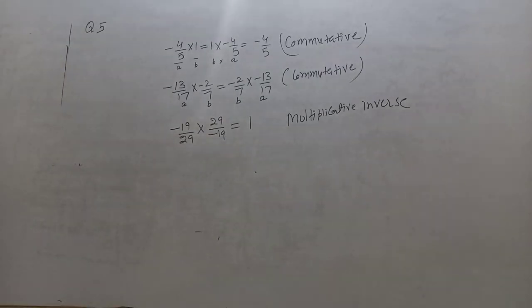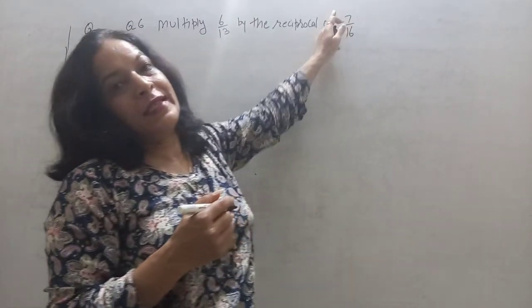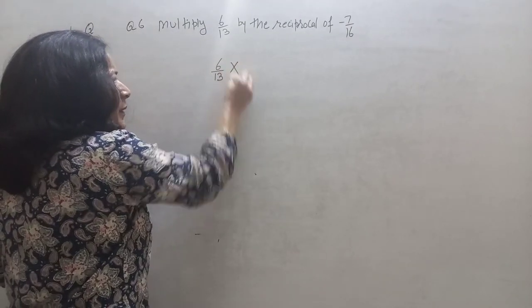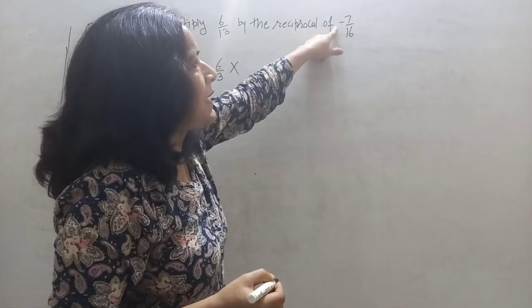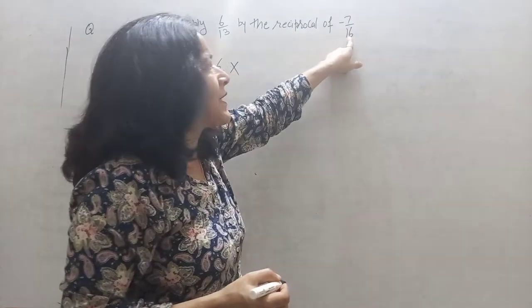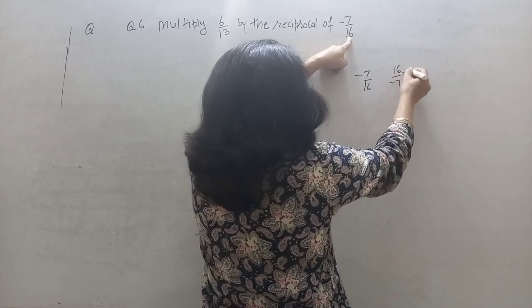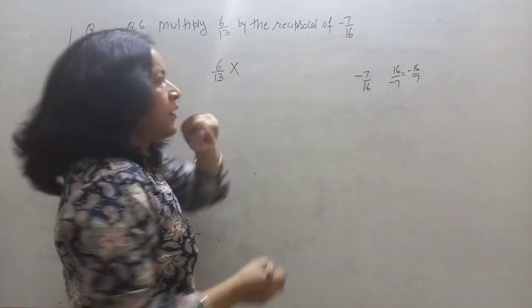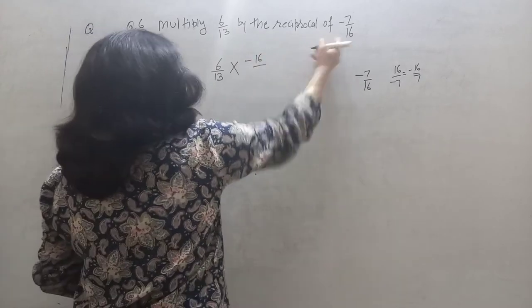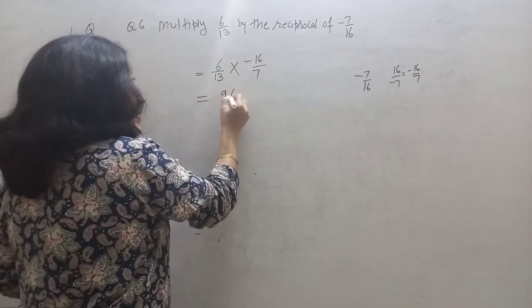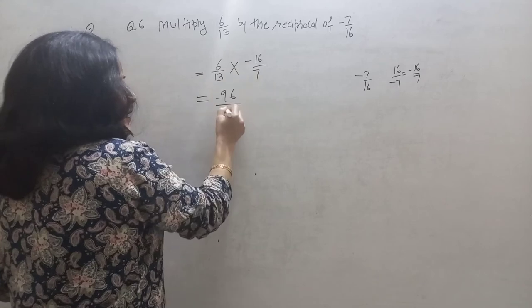Question number 6: multiply 6 upon 13 by the reciprocal of minus 7 upon 16. The reciprocal of minus 7 upon 16 is 16 upon minus 7, or minus 16 upon 7. Multiplying: 6 into 16 is 96, with minus sign, and 13 into 7 is 91. So the answer is minus 96 upon 91.